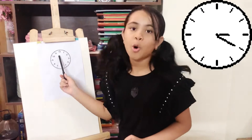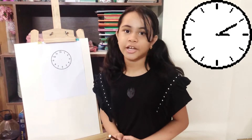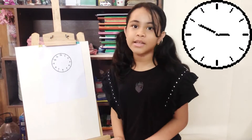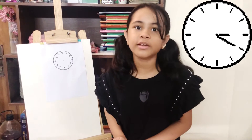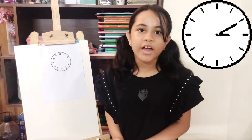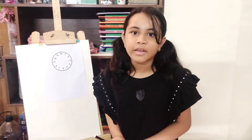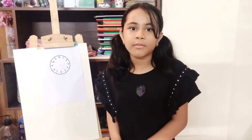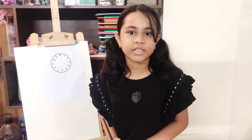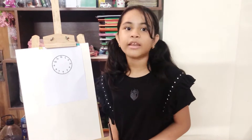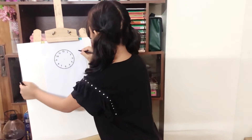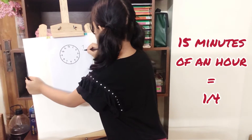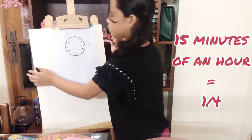This clock is a whole collection which has 60 minutes in an hour, and each minute is a fraction of an hour. Now if you want to show 15 minutes of an hour as a fraction, then you have to write it as 1 by 4.